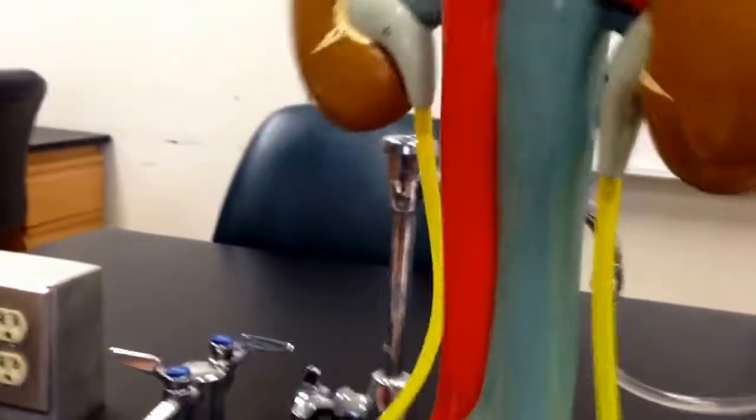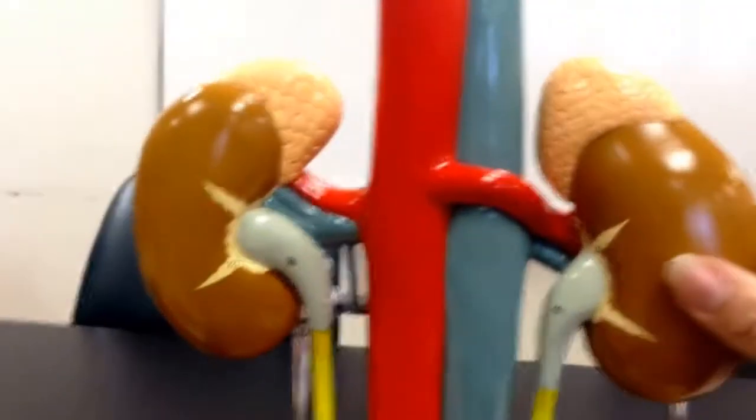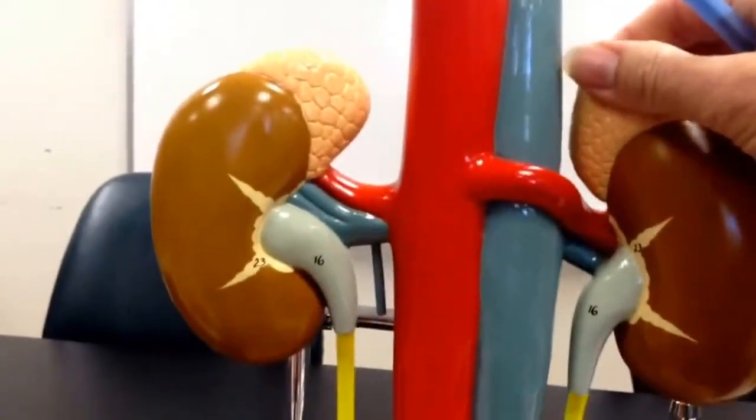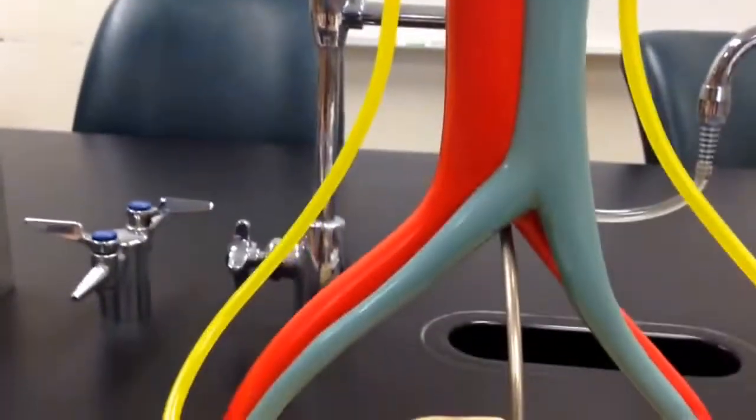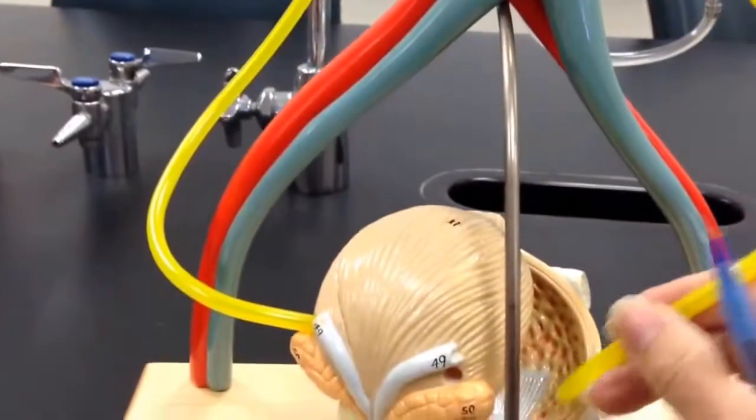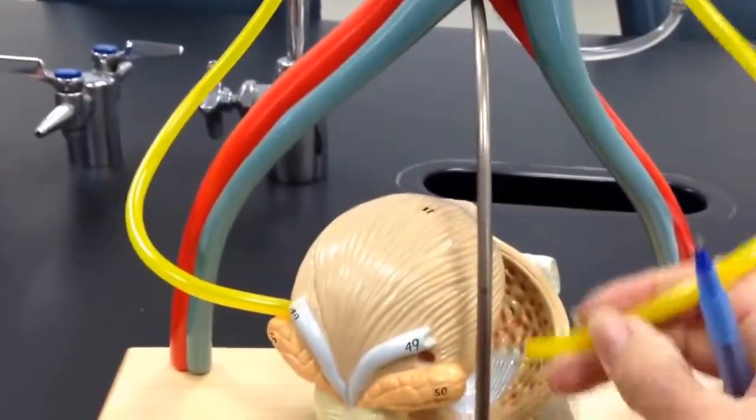So once again on this side we have our kidneys, the adrenals, the ureter coming down. So the ureter is the internal one that goes from the kidneys to the bladder.